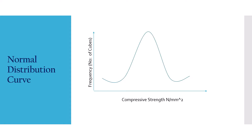Generally, a normal curve is obtained in which 5% of the test results show a lesser value than the FCK value, that is 25 N per mm².